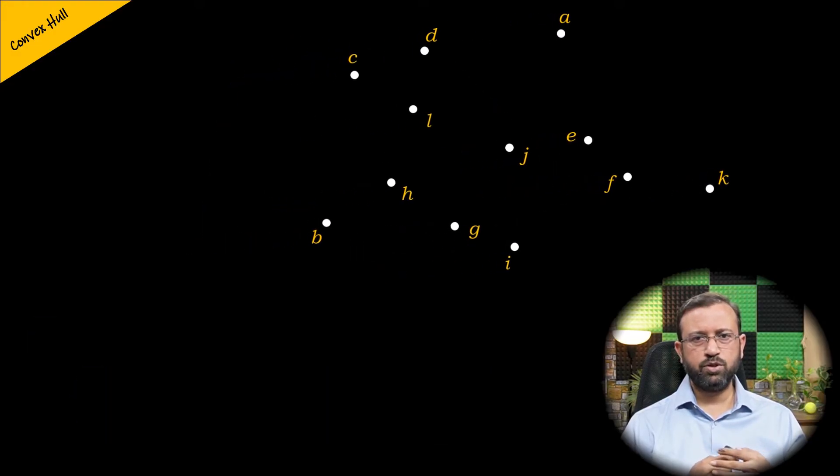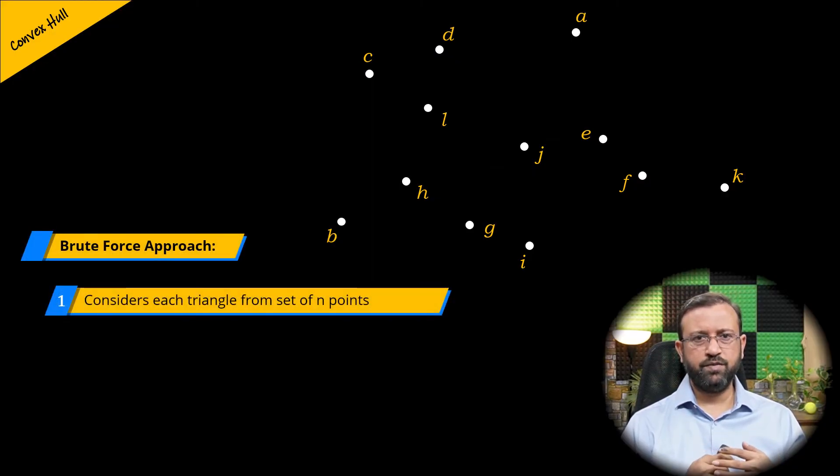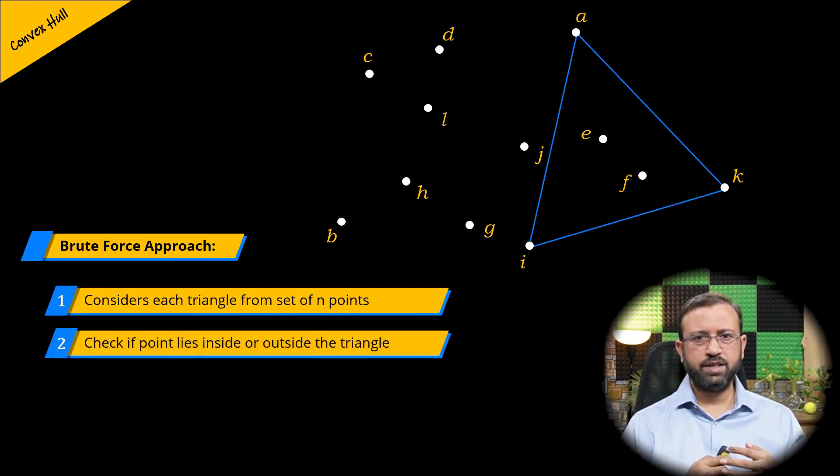The simple approach to finding the convex hull is the brute force approach. The brute force approach checks if the point is extreme. This is done by considering each possible triangle that can be formed from a set of n points.